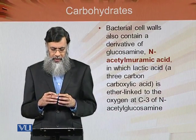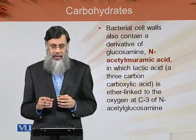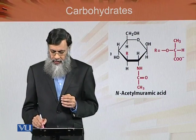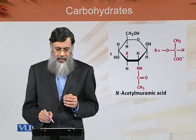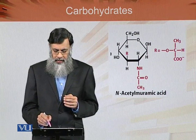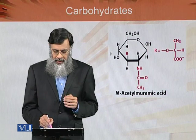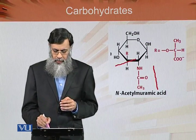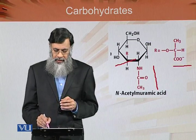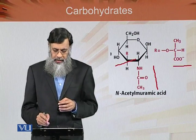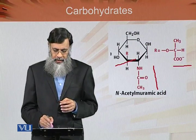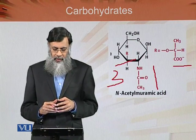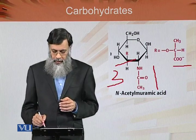Bacterial cell walls also contain derivatives of glucosamine known as N-acetyl muramic acid, with an ether linkage to the oxygen at carbon atom number 3. This is the structural configuration of N-acetyl muramic acid — the N-acetyl amino group is attached at C2, and on C3 there is an R group which is lactic acid, a 3-carbon carboxylic acid, forming N-acetyl muramic acid.